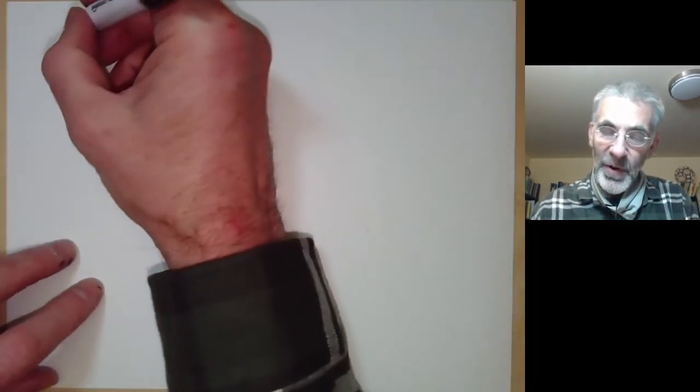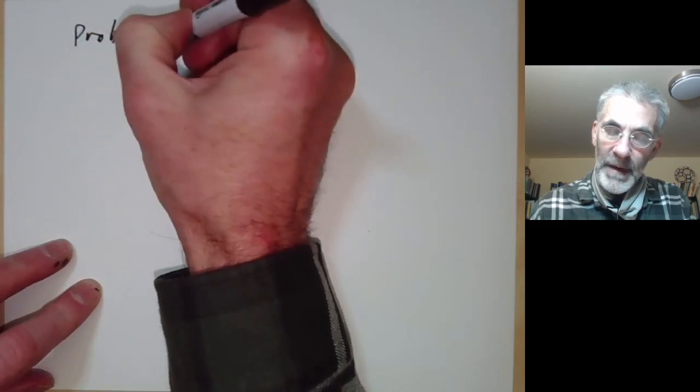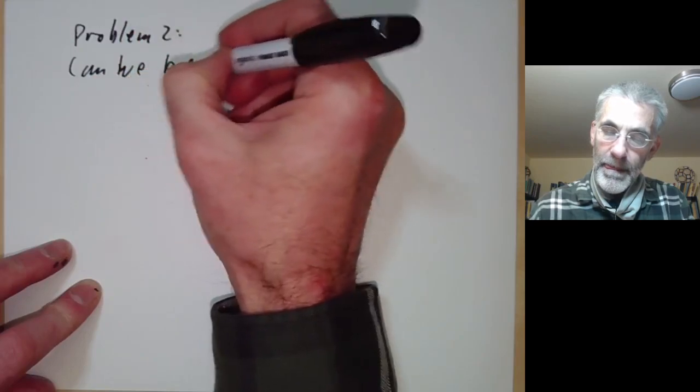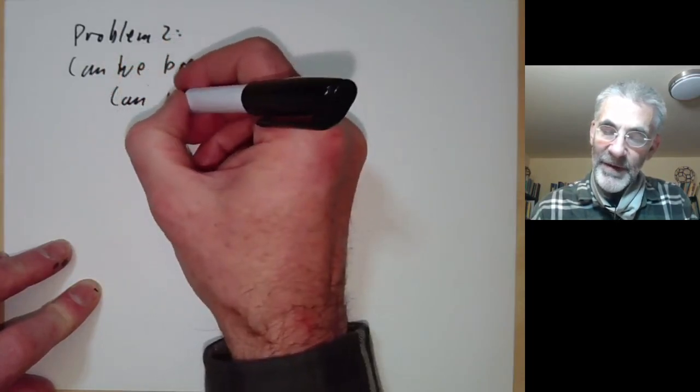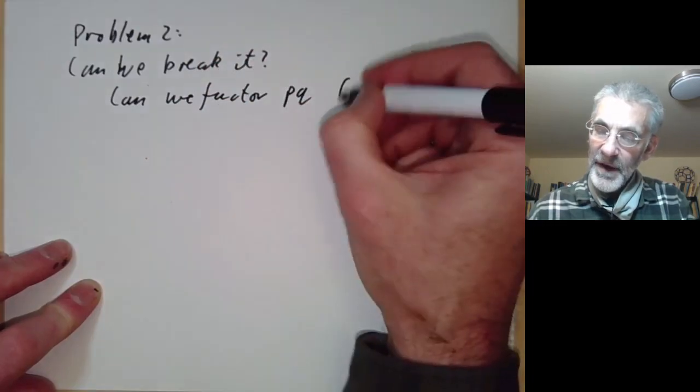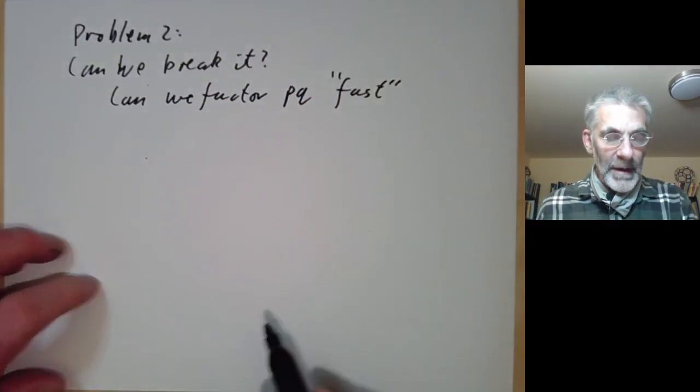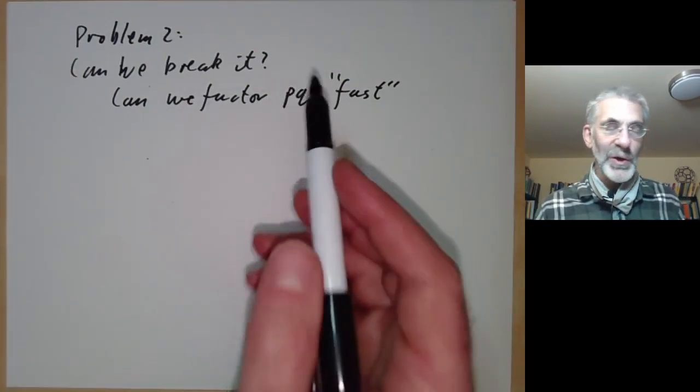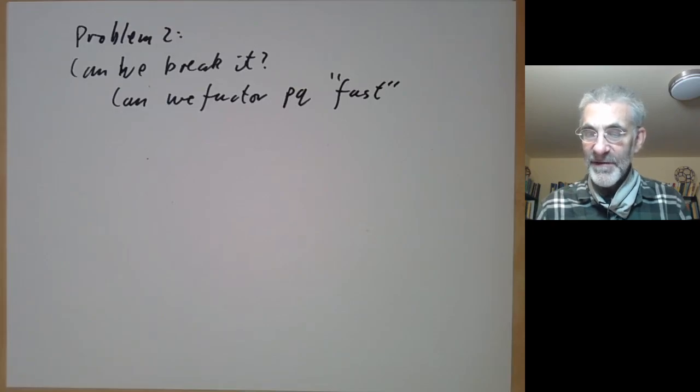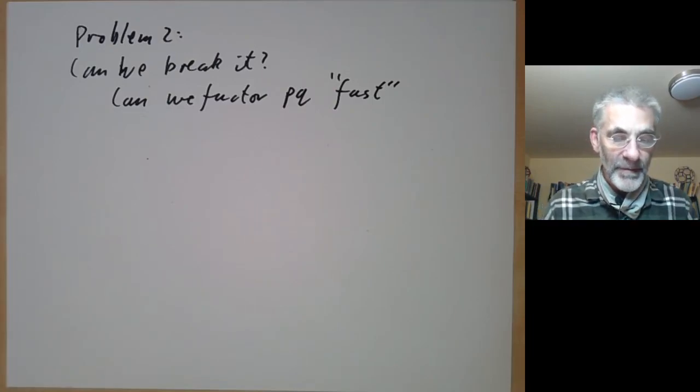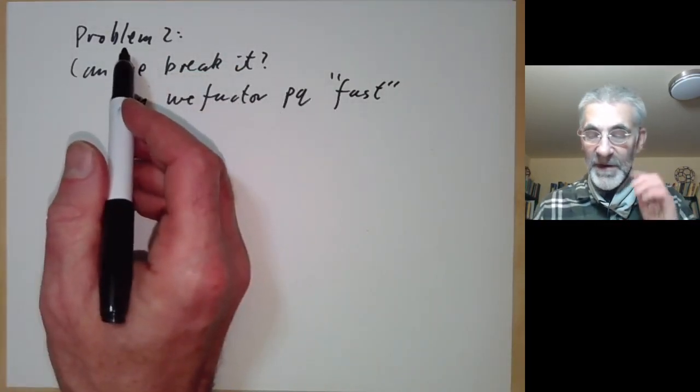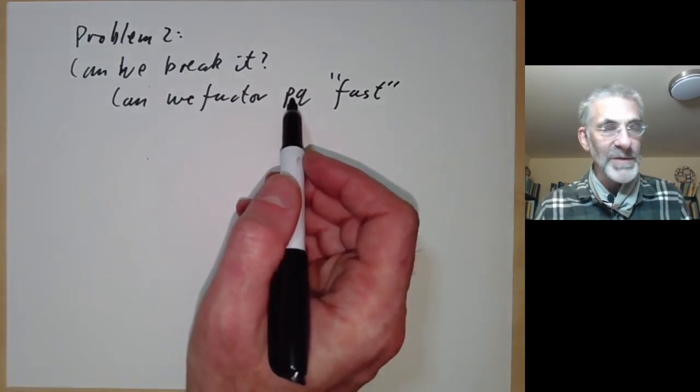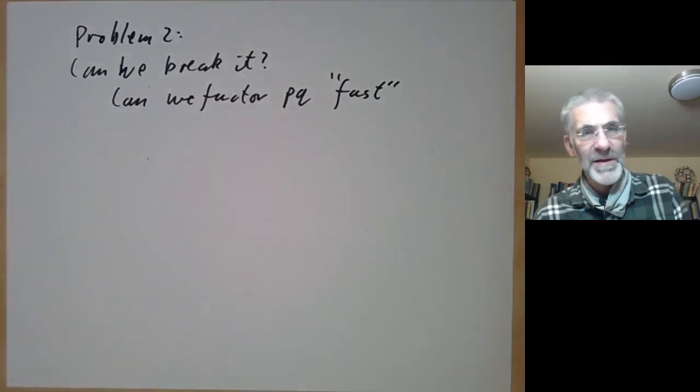Problem two: can we break it? One way to break it would be: can we factor pq fast? At the moment, if p times q has say a thousand digits, there seems to be no fast way to factor it. All known algorithms for factorizing numbers take far more than polynomial time in general. It's unclear if there's a method of inverting the function without actually factorizing pq. No one's managed to think of one, and as far as I know no one's managed to rule out this possibility, so there's a bit of uncertainty there.